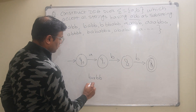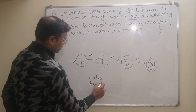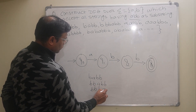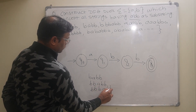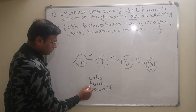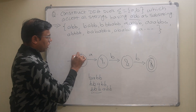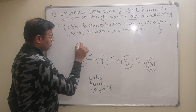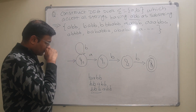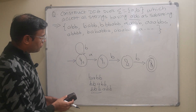To handle strings that begin with any number of B's, I will apply a self-loop of B on state Q0. This allows Q0 to accept and remain on any number of B's before the pattern ABB begins.